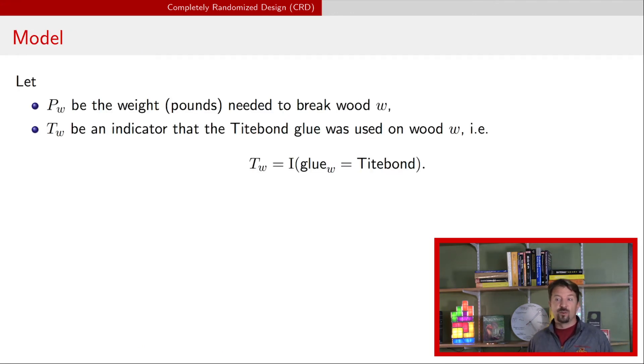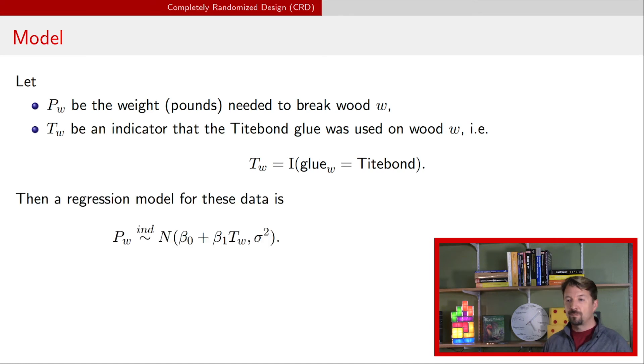If we fit a regression model the regression model might look like this. We're going to introduce notation here for two variables. We're going to have P subscript W is the pounds needed to break wood piece W. T subscript W is going to be an indicator that it was Titebond. Remember that we have categorical variables we need to assign one of them as the reference level. In this case it was Gorilla and we included dummy variables for all the other levels of that categorical variable. So here all we need is that dummy variable for Titebond. Now our model might look like this so the pounds are normally distributed they're independent with a mean that depends on whether it was Titebond or not and a common variance sigma squared. In this analysis the important parameter here is beta 1 because that's going to provide us the difference in strength between these two glue types.